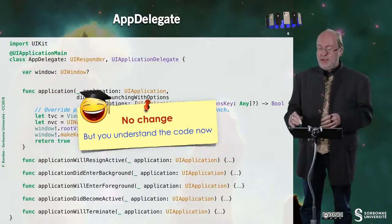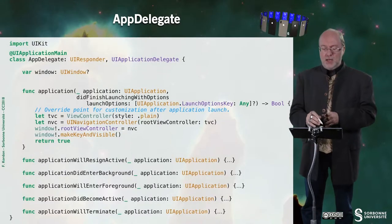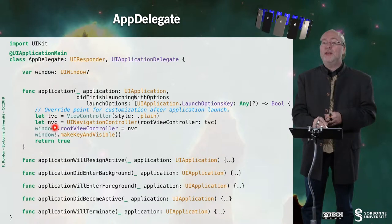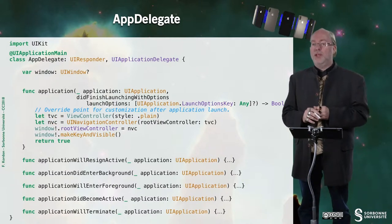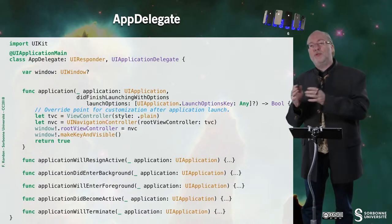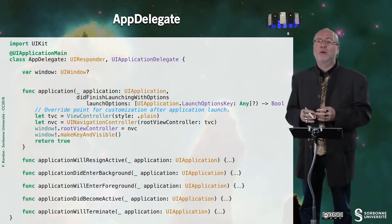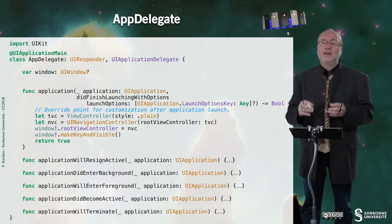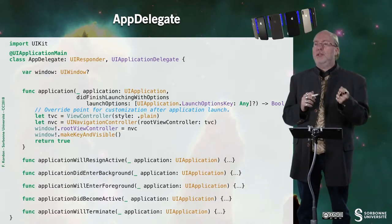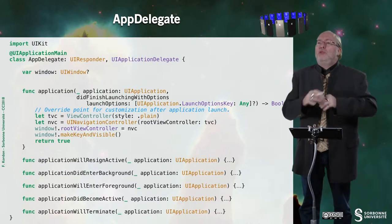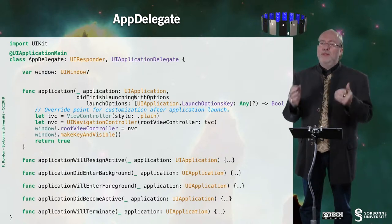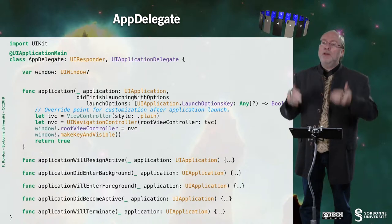Compared to the previous version of this example, there is no change in the app delegate. This is because we were already embedding the table view controller in a navigation controller. Here I use a view controller that inherits not from UIViewController but from UITableViewController, so it is a table view controller — and I already had a navigation controller attached to it.